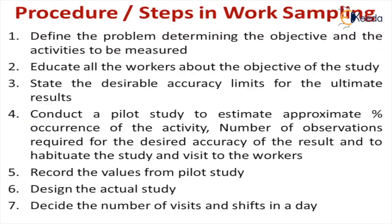The steps and procedures in work sampling are as follows: first, define the problem — determine the objective and the activity to be studied. Educate all the workers that the study is going to run and what its objective is. Then determine the accuracy limits for the study, and make a pilot study to estimate the approximate occurrence of an activity.